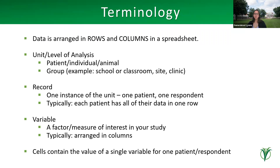Let's start with some background terminology. Data is usually arranged in rows and columns in a spreadsheet format. The unit or level of analysis is usually patients or individuals, though sometimes it may be a group like a school, classroom, or clinic. A record means one instance of that unit — one patient or respondent — and typically each patient has all their data in one row. A variable is a factor or measure of interest in your study, oriented in columns, and a cell contains the value of a single variable for one patient.